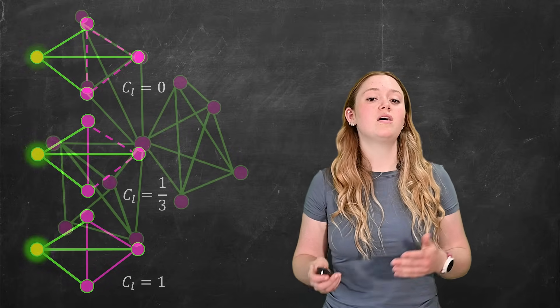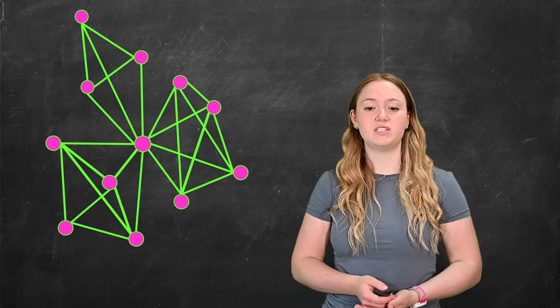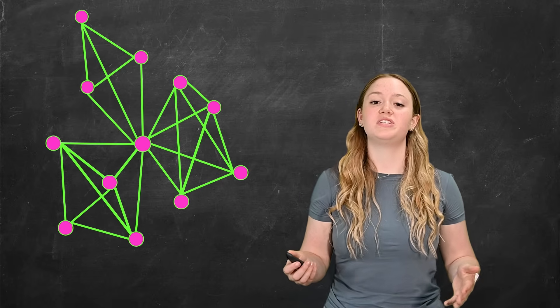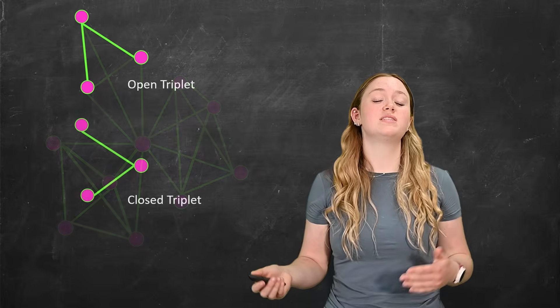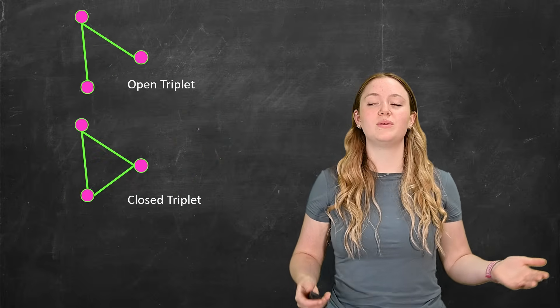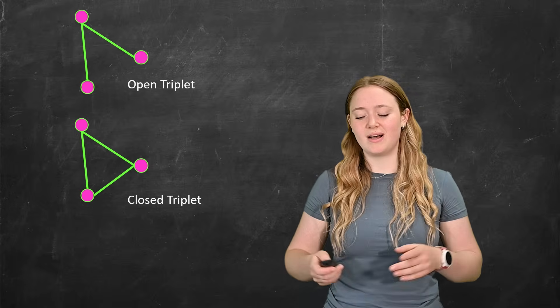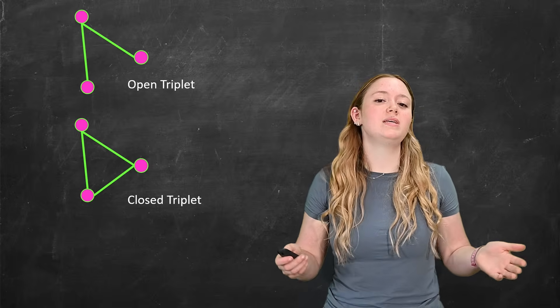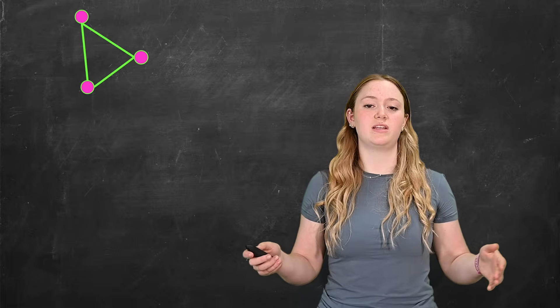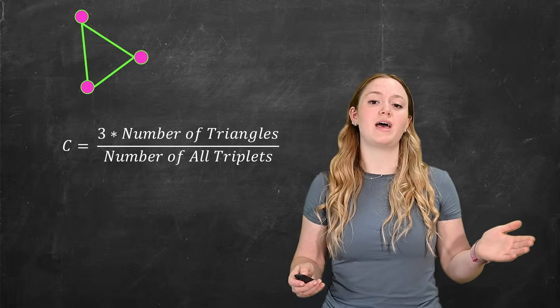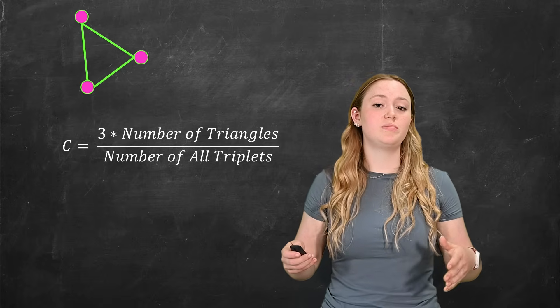But how do we look at the overall clustering of the graph? For this, we look at the global clustering coefficient. The global clustering coefficient is based on the concept of triplets of vertices. Here, you can see we have an open triplet or we have a closed triplet, which we also just call a triangle. The way that we calculate the global clustering coefficient is by taking 3 multiplied by the number of triangles in the graph divided by the number of all triplets in the graph.